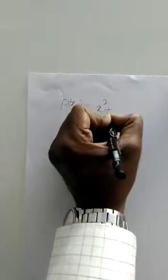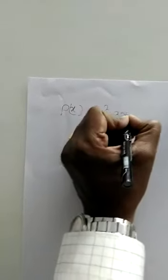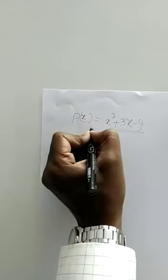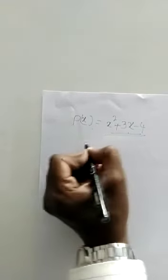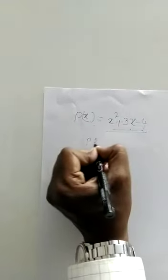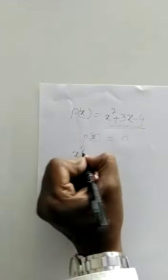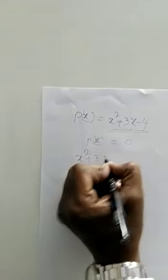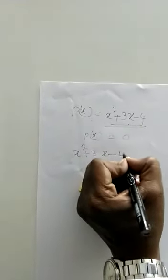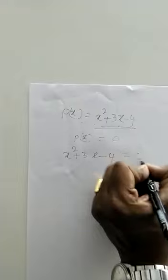Given equation: P of x is equal to x squared plus 3x minus 4. You already learned how to find the zeros of this polynomial — set P of x equal to 0, then x squared plus 3x minus 4 equals 0.